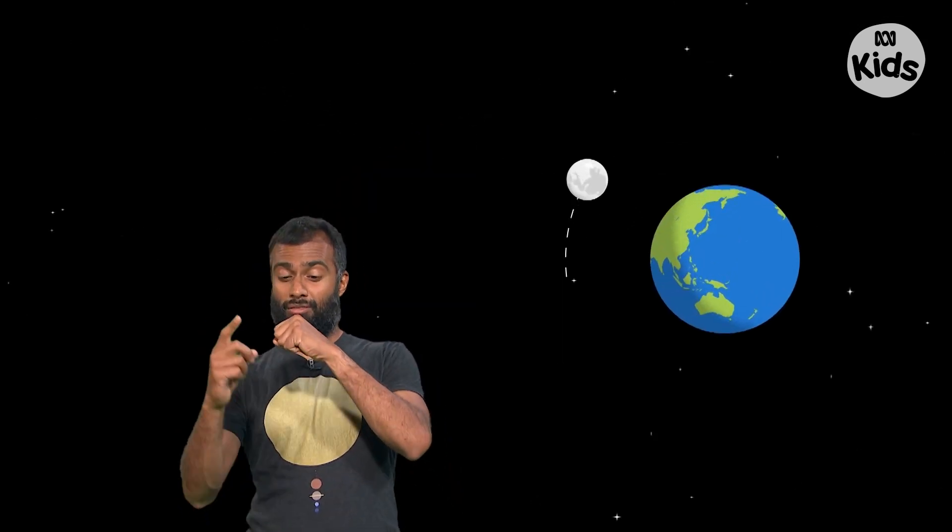Astronomers learn how things move in space too. The moon moves around the earth and the earth moves around the sun. Comets fly by and stars explode. Astronomy is about understanding what all these things are made of and how and why they move the way they do.